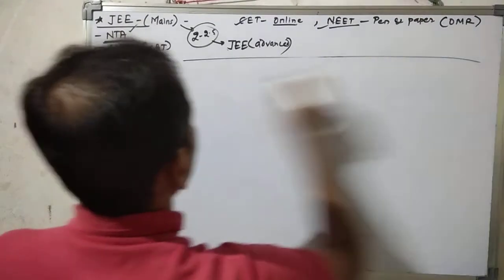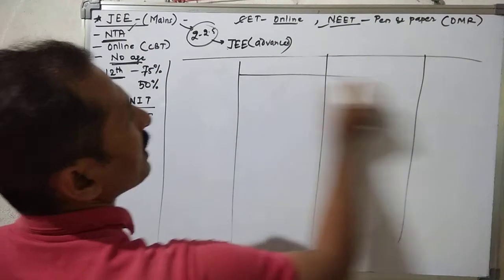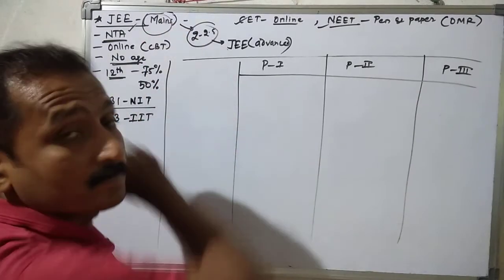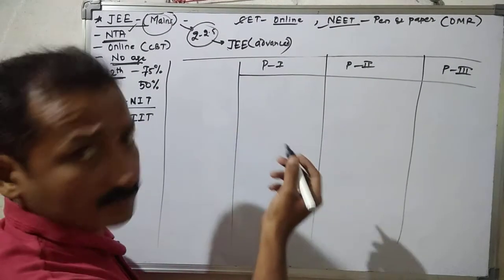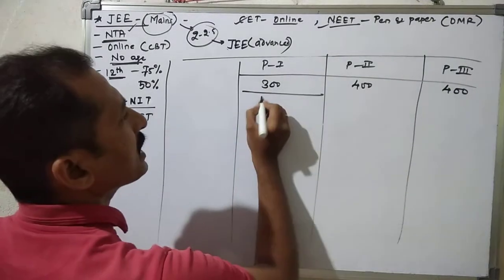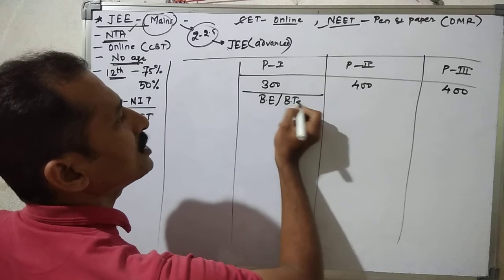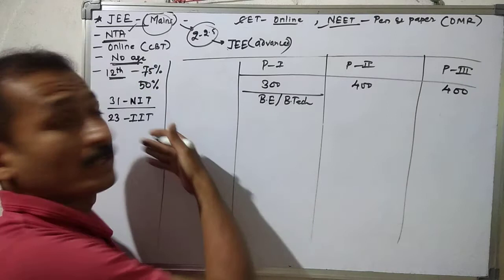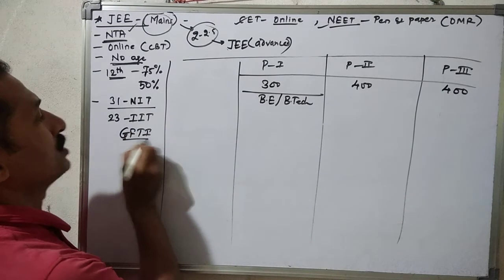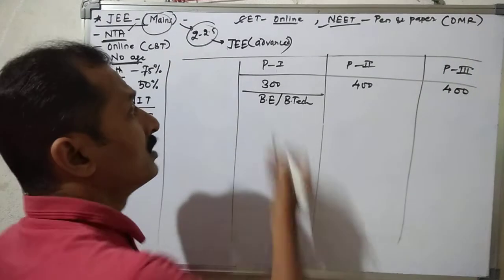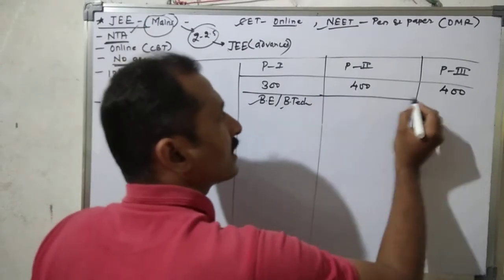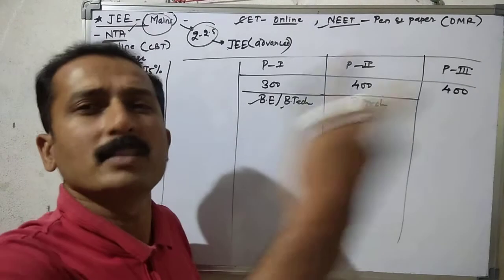There are three papers in JEE Main. Paper 1 is worth 300 marks, Paper 2 is worth 400 marks, and Paper 3 is also worth 400 marks. Paper 1 is for Bachelor of Engineering and Bachelor of Technology — for admission to top government-funded technology institutes. Paper 2 is for Bachelor of Architecture — vastu shilpa — related to building design and 3D planning.